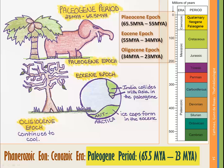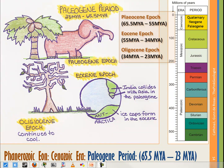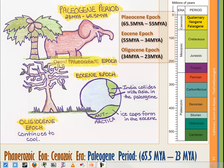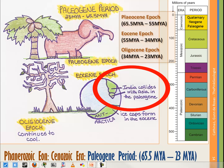The Paleogene period lasted from about 65.5 million years ago to about 23 million years ago, and it's marked by three epochs. The first is the Paleocene epoch, 65.5 to 55.5 million years ago. Here we see a pretty tropical climate, a lot of our modern plants appear, and there's diversification of mammals taking over the niches left by the dinosaurs. We also see the Indian subcontinent collide into Asia and the Himalayan orogeny begin — which is still somewhat active even today.